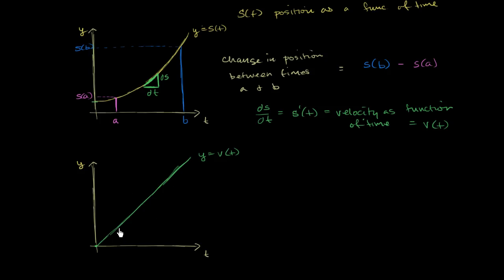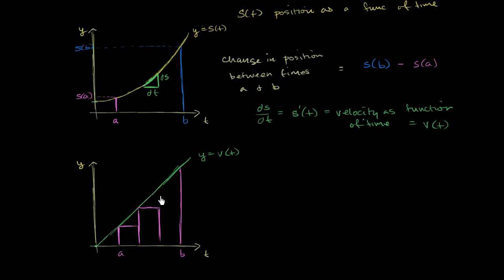Using this graph, let's think about whether we can conceptualize the change in position between time a and time b. Let's go back to our Riemann sums and think about what the area of a very small rectangle would represent. Let's divide this into a bunch of rectangles — I'll do a fairly large one so we have space to work with, but you can imagine much smaller ones. I'm going to do a left Riemann sum, though we could do a right Riemann sum, a trapezoidal sum, or anything we want. Let me just do 3 rectangles right now.